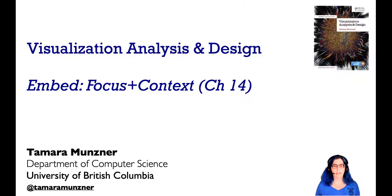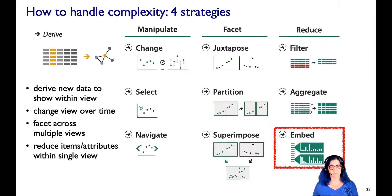Now we're going to talk about combining focus and context information together, embedded within a single view. We've talked about the four strategies for handling complexity: deriving new data, having an interactively changing view over time, faceting across multiple views, and then reducing the number of items or attributes shown within a single view. Embedding focus plus context together falls into that category of reducing the amount of information shown.